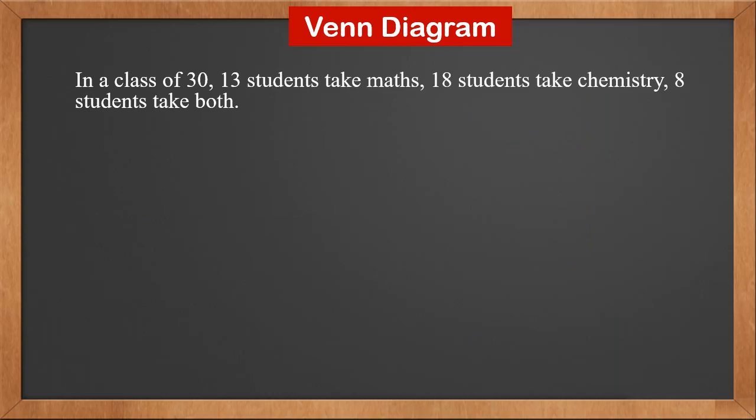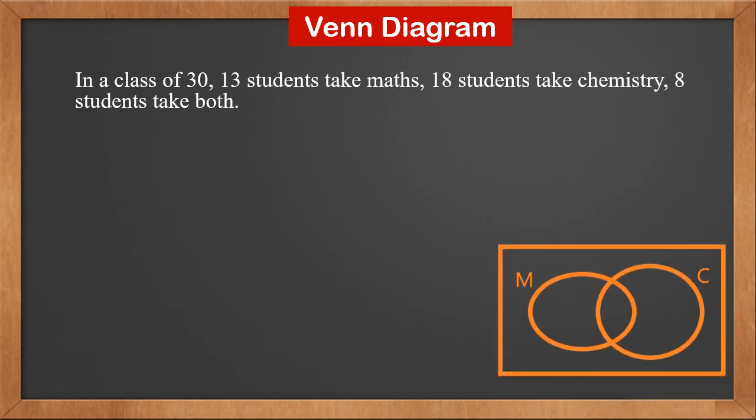Now let's look at an example of how to solve probability problems with Venn diagram. In a class of 30, 13 students take math, 18 students take chemistry, 8 students take both. We can draw a Venn diagram like this.